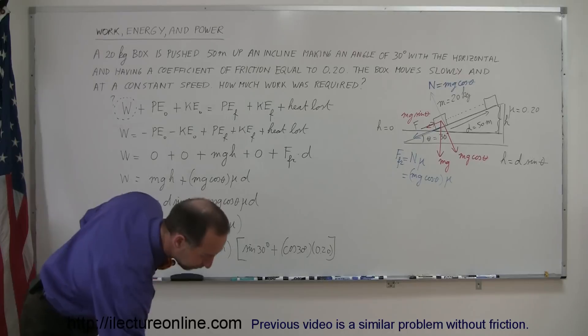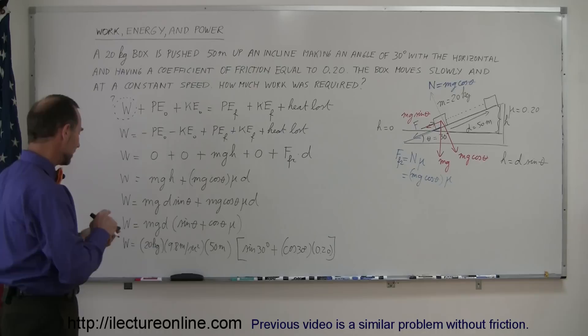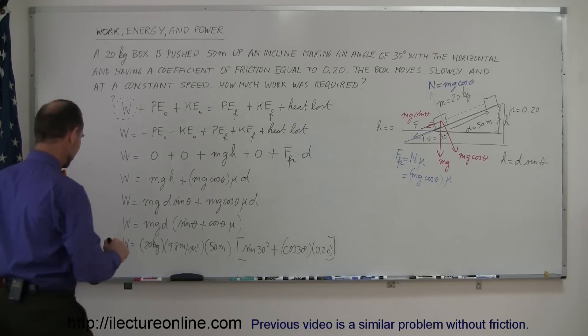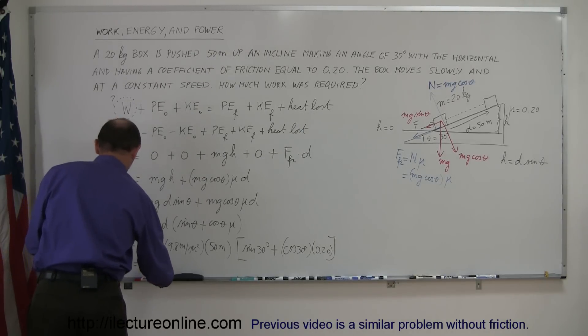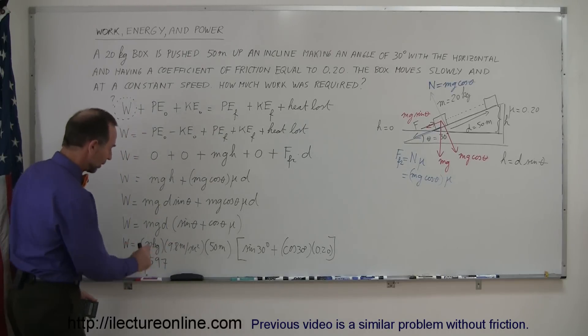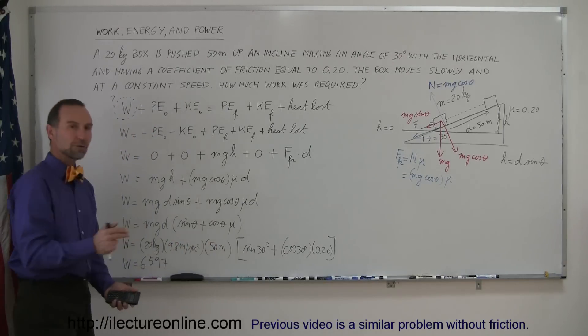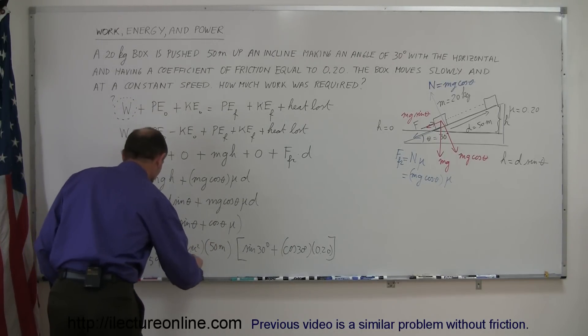And now we need a calculator. So we have 30 times the cosine times 0.2, add that to the sine of 30, which is a half, so plus 0.5, and then we multiply it times 50, multiply it times 9.8, multiply it times 20, and we get the work done is equal to 6,597. And of course what are the units? Well, kilograms times meters per second squared, that's newtons, and multiply newtons times meters, that's newton meters, which is joules, so that means the answer is in joules.